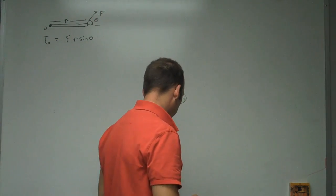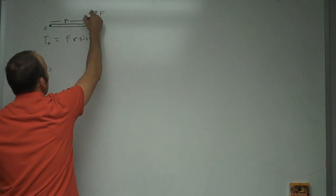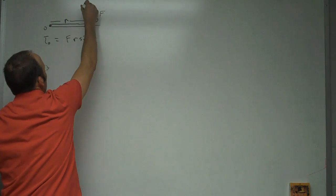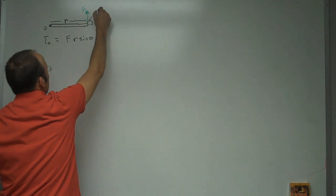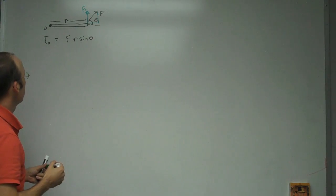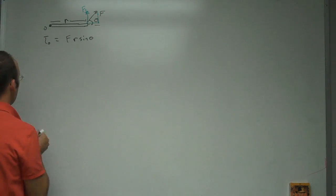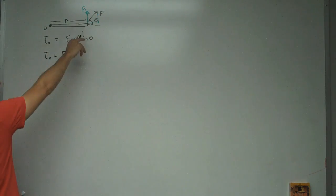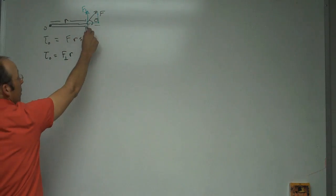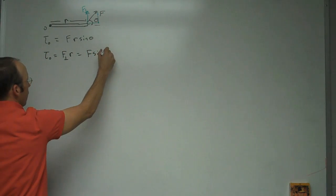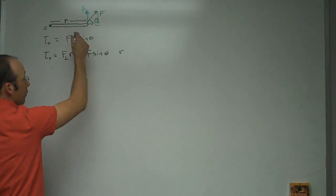The next way is to take what's called, what I call the perpendicular force. I'll call this F perpendicular. It's the same as that part of the triangle, the side right there. So I could also say torque equals F perpendicular R, and you'll see here that F perpendicular is going to be the opposite side of that triangle, so it's going to be equal to F sine theta R. So the same thing.